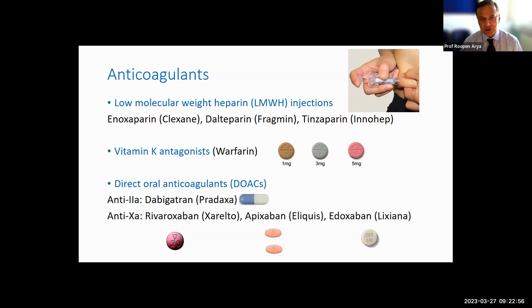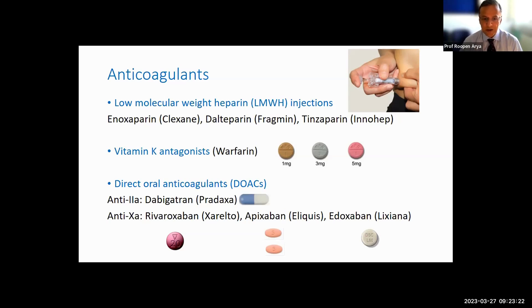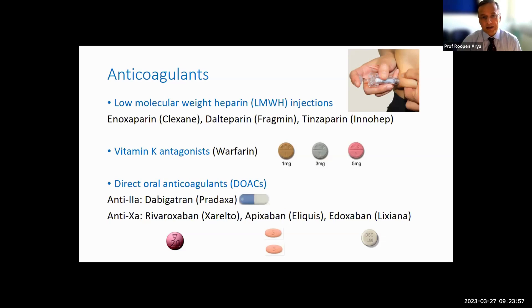Warfarin has been our main anticoagulant for many decades. In the past decade, warfarin has mostly given way to the newer generation called direct oral anticoagulants. Unlike warfarin, which has a broad effect on a host of clotting factors, these newer drugs very specifically target a single clotting factor — thrombin or factor 2 in the case of dabigatran, or factor 10 in the case of rivaroxaban, apixaban, and edoxaban. These are now the main anticoagulants for stroke prevention in atrial fibrillation and for treatment of venous thromboembolism, though warfarin remains preferred for patients with mechanical heart valves or antiphospholipid syndrome.